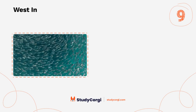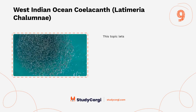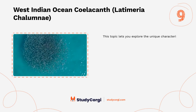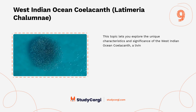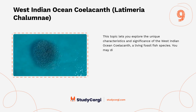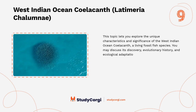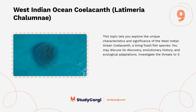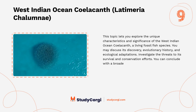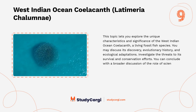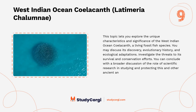West Indian Ocean coelacanth (Latimeria chalumnae): This topic lets you explore the unique characteristics and significance of the West Indian Ocean coelacanth, a living fossil fish species. You may discuss its discovery, evolutionary history, and ecological adaptations. Investigate the threats to its survival and conservation efforts. You can conclude with a broader discussion of the role of scientific research in studying and protecting this and other ancient and enigmatic species.